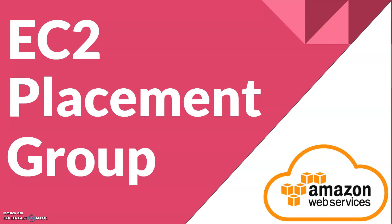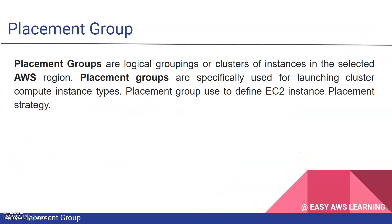EC2 placement group. Let's understand what placement group is and how it is useful to us. We'll discuss the details about placement groups and also see demos in the console on how to use placement groups to deploy EC2 instances. Placement groups are logical grouping or clusters of instances in a selected AWS region, specifically used for launching cluster compute instance types. Placement groups are used to define EC2 instance placement strategy.